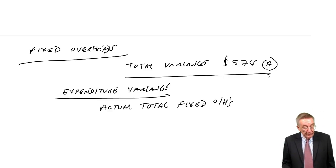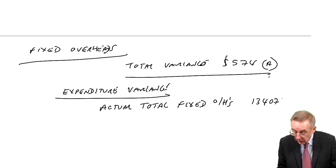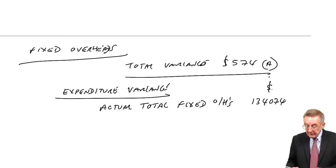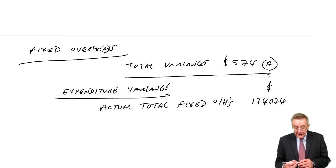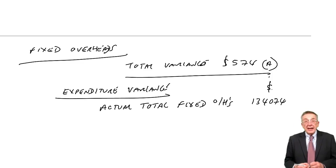which from the question at the very bottom, 134,074. And as I said a minute ago, total fixed overheads shouldn't change, whether you produce more, whether you produce less.